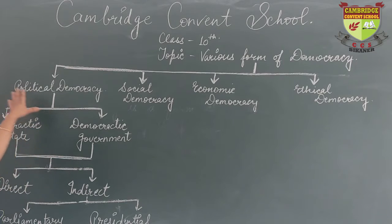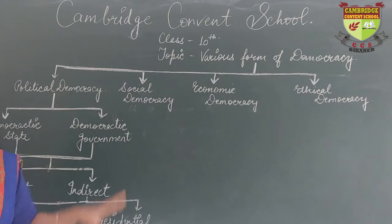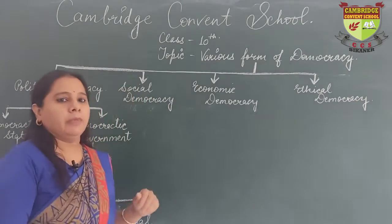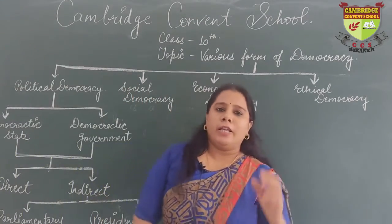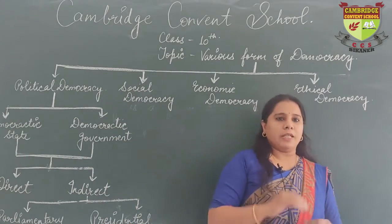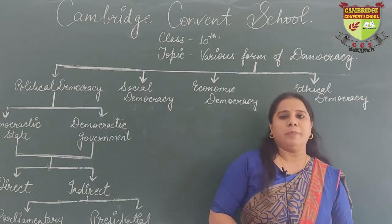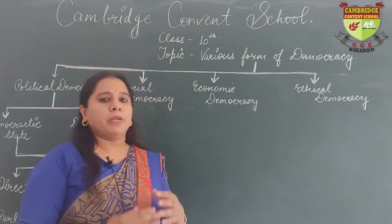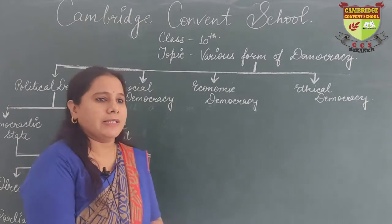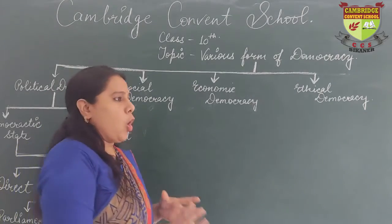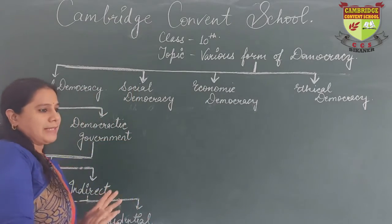Political democracy — in the past it was known as individualistic democracy. Why was it known as individualistic democracy? Because at that time it was believed that there is one person who will come, will rule the nation, and will go. Later on that was proved wrong, and then it was believed to be a liberalistic democracy. Liberalistic democracy is that form of government in which the government believes in progress and reform.